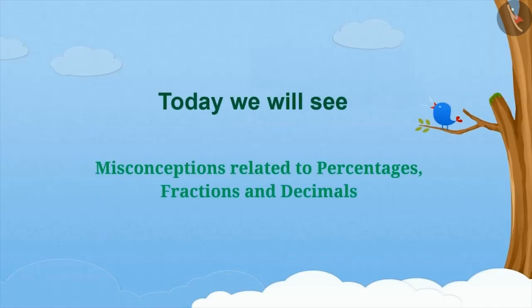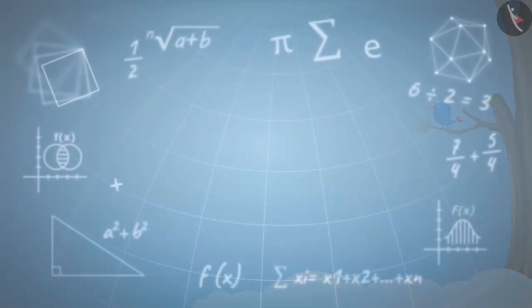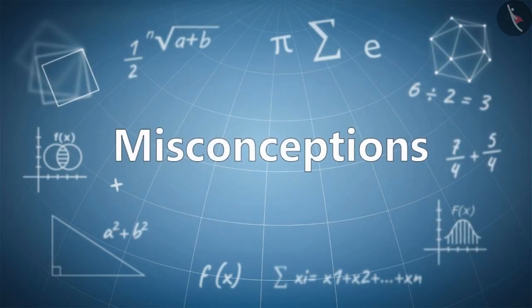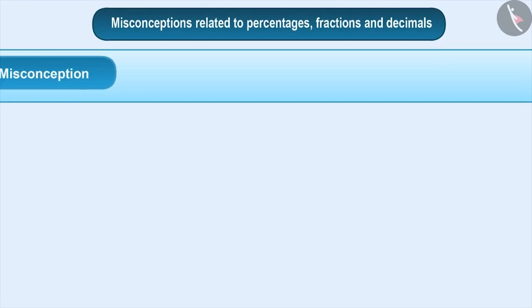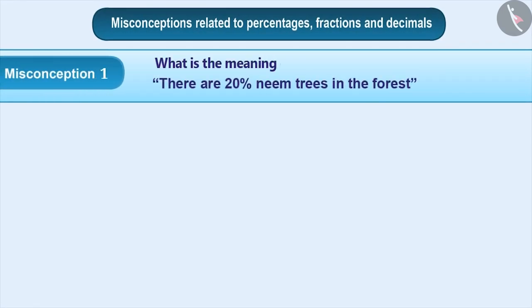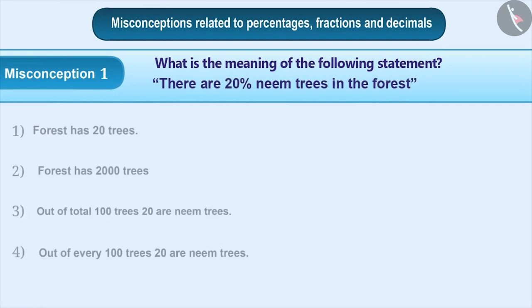Today, we will see some misconceptions related to percentages, fractions, and decimals. Misconception 1: What is the meaning of the following statement? There are 20% neem trees in the forest.